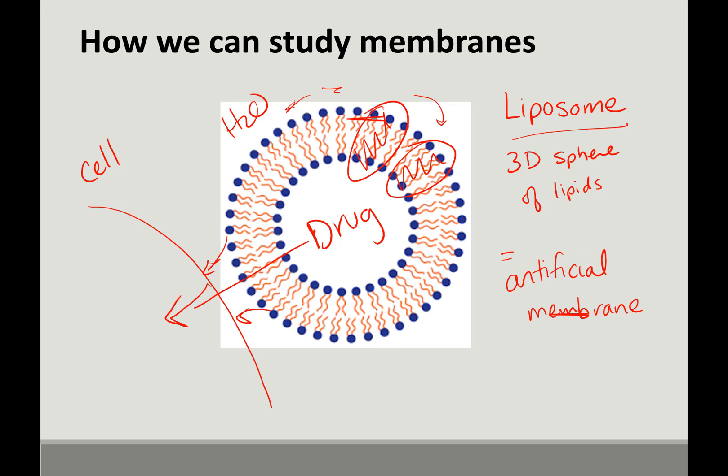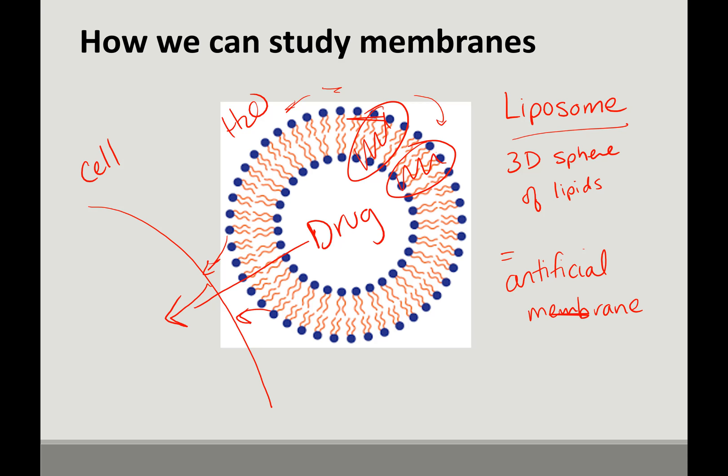So membranes are made of lipids and proteins. I want you to understand the different types of lipids, the different types of proteins, understand what affects membrane fluidity, understand some of the big concepts and terms that describe membranes. Because in Chapter 8, we're going to talk about moving things across the membranes. So transport, which is essential for maintaining cellular function. All right, thanks.